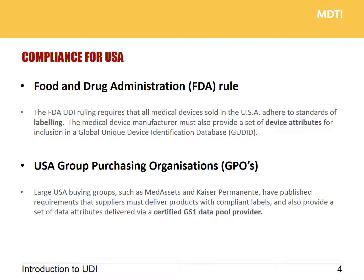So if we start with compliance for the USA, the Federal Drug Administration rule requires all medical devices sold in the US to adhere to GS1 labeling and also provide a set of data attributes to what they call the GUDID. Please always bear in mind that large US group purchasing organizations — Kaiser Permanente, Med Assets — have also published their own requirements which go far in excess of the FDA database. They essentially want manufacturers, if you supply to them, to deliver data via a certified GS1 data pool provider.